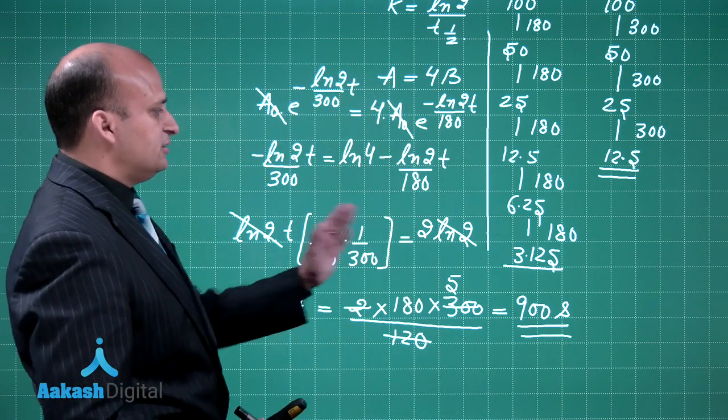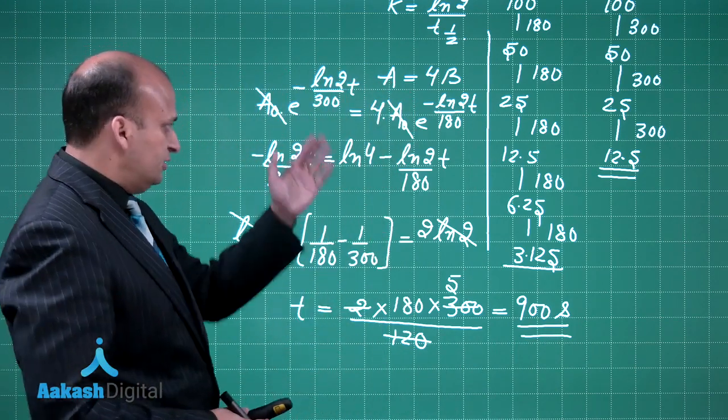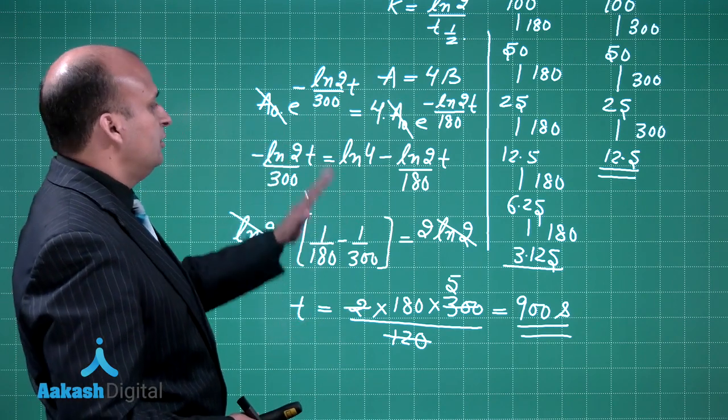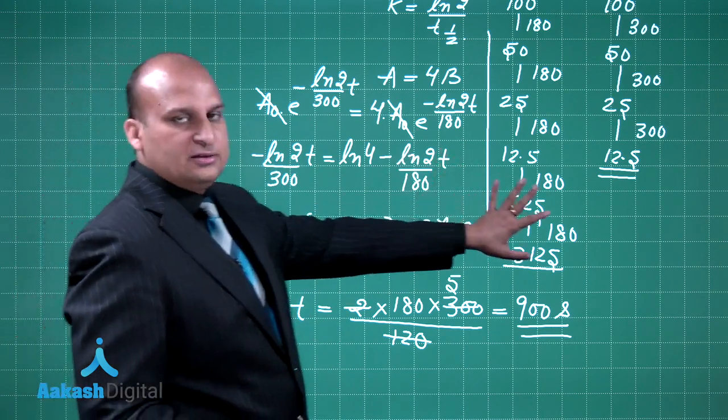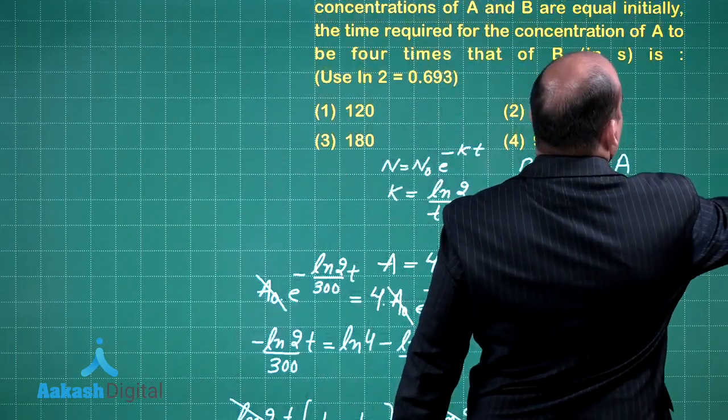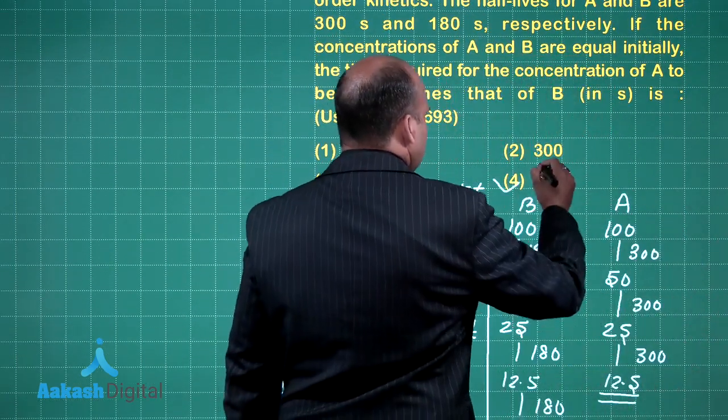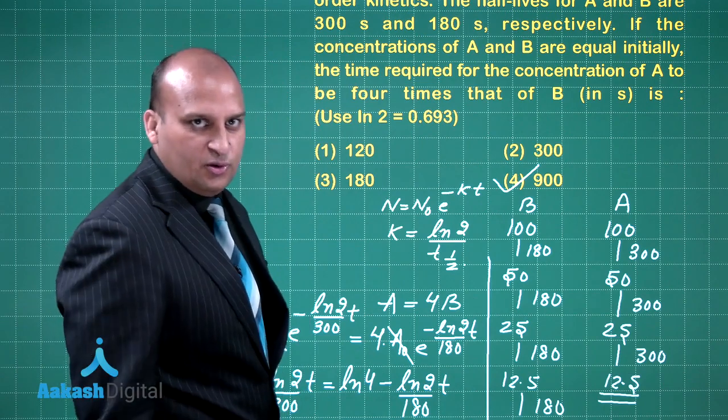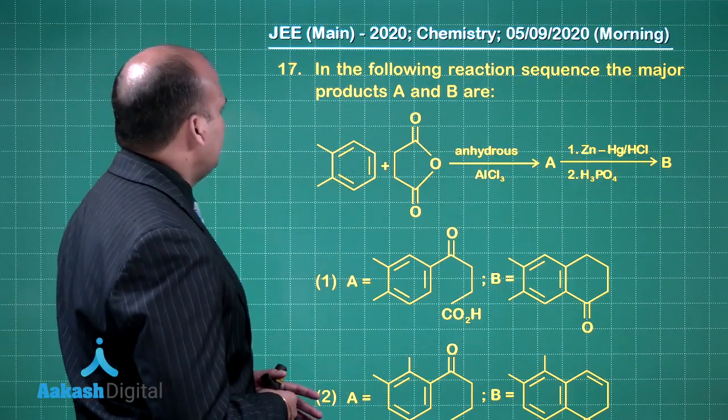So there are 2 ways in which you can solve the problem. This is the actual derivational way, this is a cheat, you can use either of the 2, the answer is coming out to be 900 seconds, that is option number 4. Now let us look at question number 17.